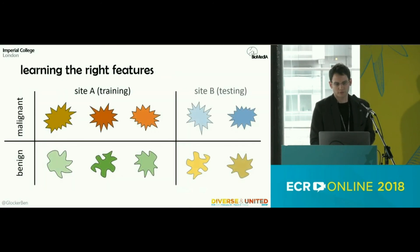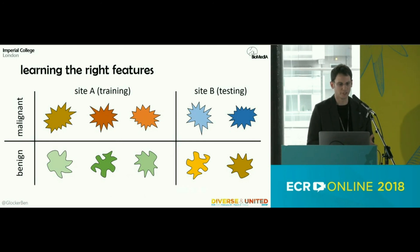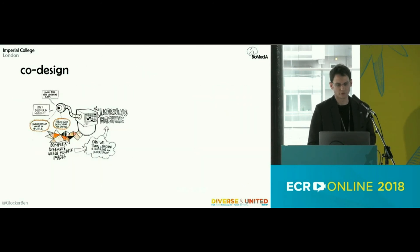Another issue is learning the right features. If you use data from only one site, your system will always learn the simplest discriminating feature. For example, if training data from site A happens to differ in color rather than shape between classes, the model will learn color instead of shape — and you'll only discover this error at test time.